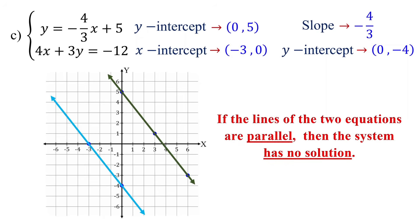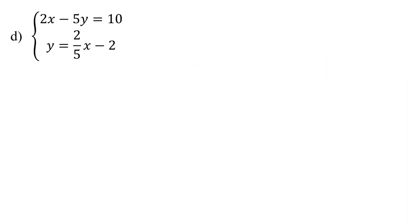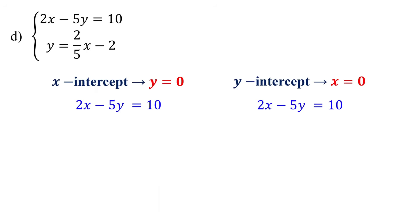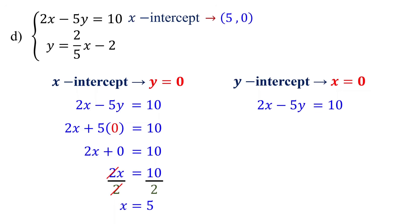Finally, let's consider the case where the system of equations has infinitely many solutions. The first equation is given in standard form, so first we will find its x and y-intercepts. To find the x-intercept, set y to 0. 5 times 0 equals 0, and we get 2x equals 10. Divide both sides by 2 to isolate x. 10 divided by 2 is 5. So, the x-intercept is (5, 0).